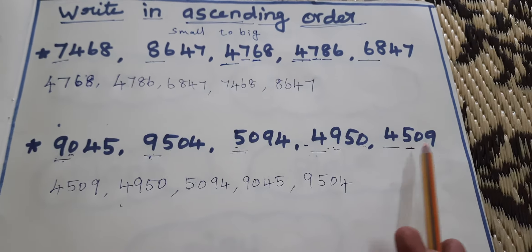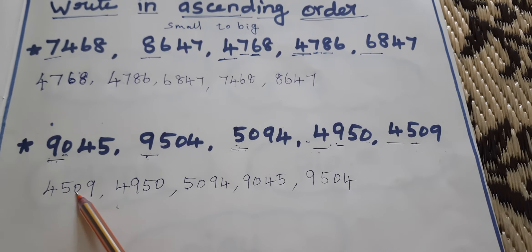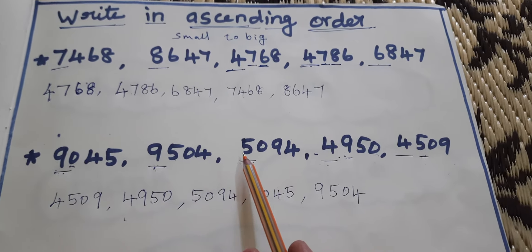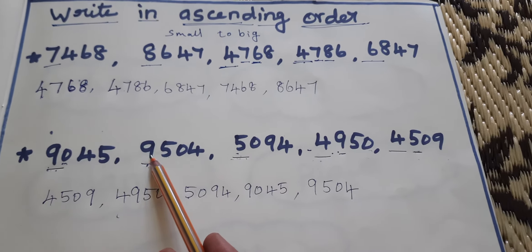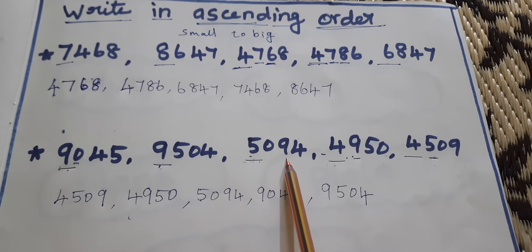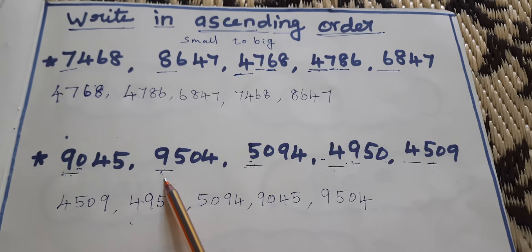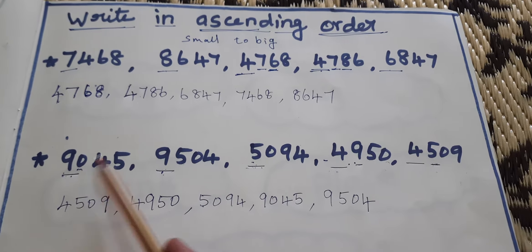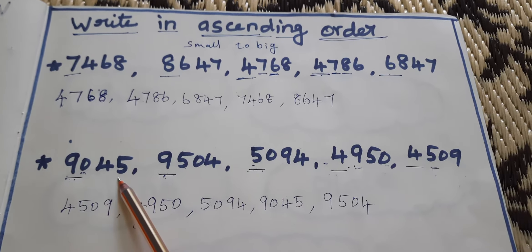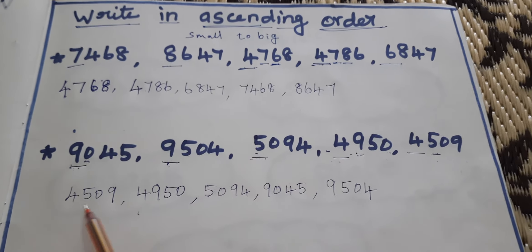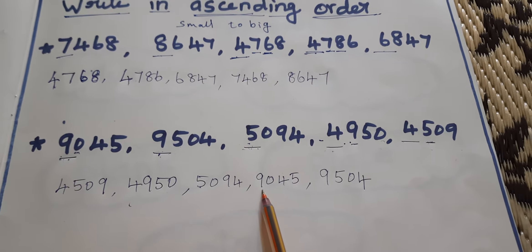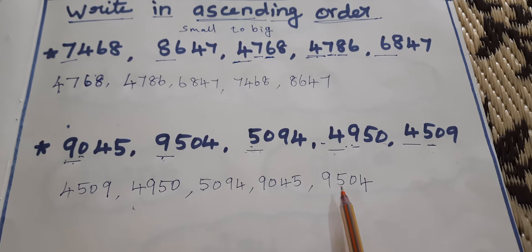Which one is the smallest number? 4509 is the smallest number. Then, 4950 is the next smallest number. Then, 5094. Next, we compare 9045 and 9504 — both start with 9000, so we look at the hundreds: 9045 has 0, 9504 has 500. So 9045 is the smaller. Last one, 9504. Ascending order: 4509, 4950, 5094, 9045, 9504.